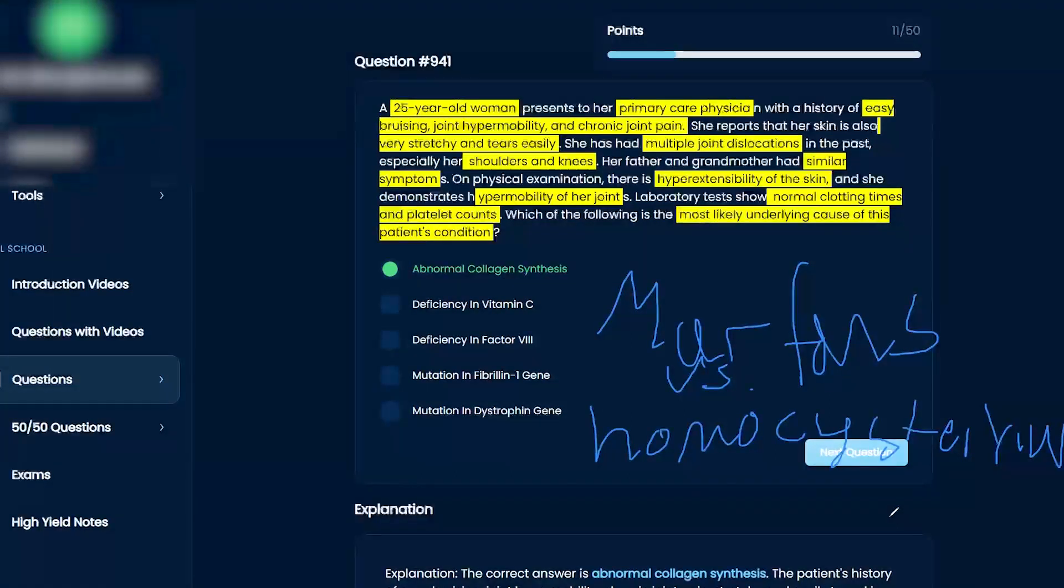The lens goes the opposite way with homocystinuria. Lens down. But just remember that phenotypically they look very similar, right? Because homocystinuria, these patients also have Marfanoid characteristics. They're tall, they're lanky, things like that.